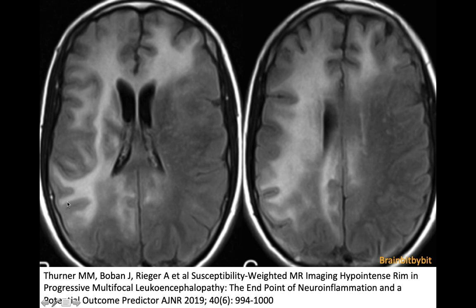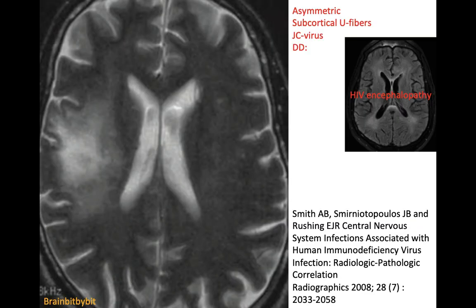The abnormalities are sharp towards the gray matter and blurry towards the ventricle. The main differential is HIV encephalopathy, which is more symmetrical and does not involve the subcortical U-fibers. So if there is sparing of the subcortical U-fibers, you should think of HIV encephalopathy, and when they are involved, you should think of PML.